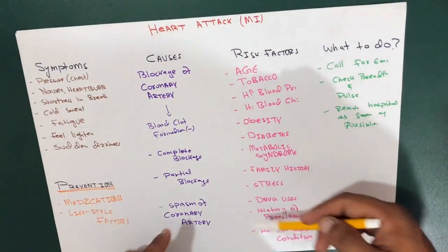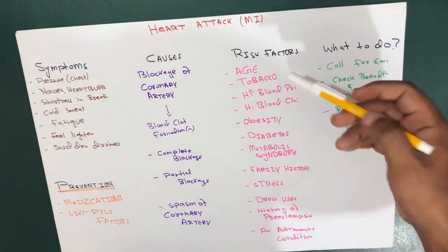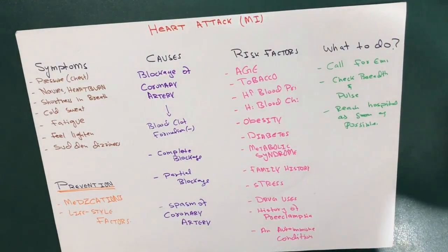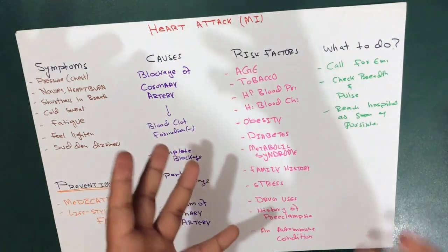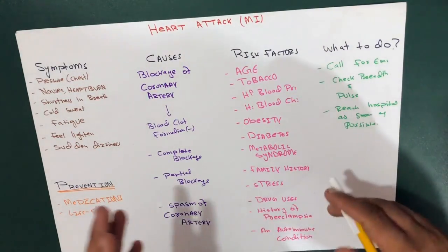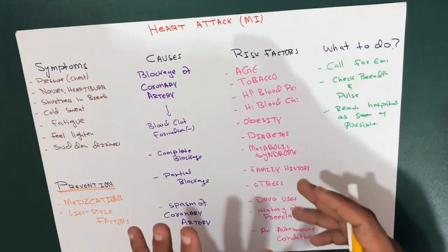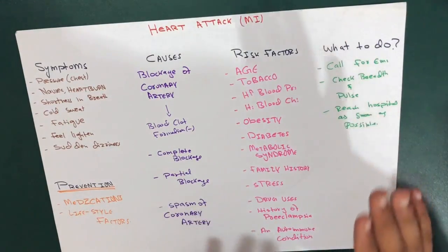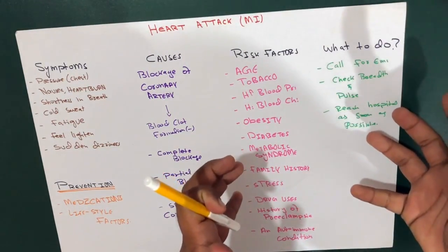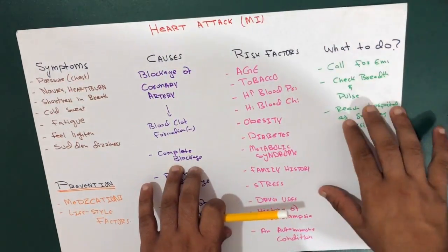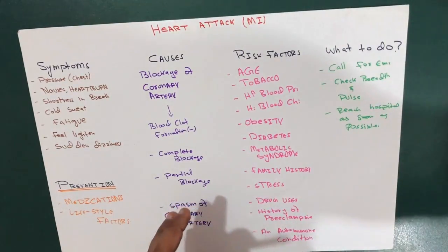We've covered heart attack basics, symptoms, causes, and risk factors. Now, what do you do if you see someone who might be having a heart attack? If the person is unconscious, the first priority is to call for emergency medical help. Then check if the person is breathing and has a pulse.